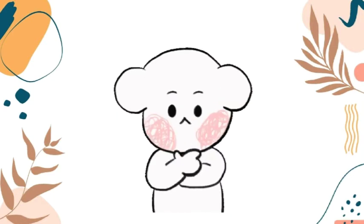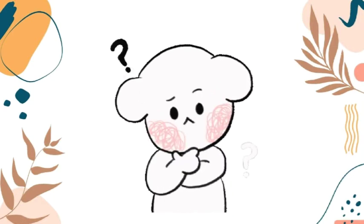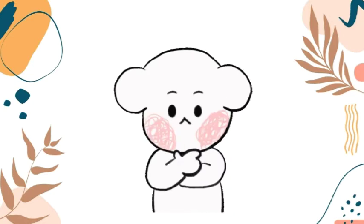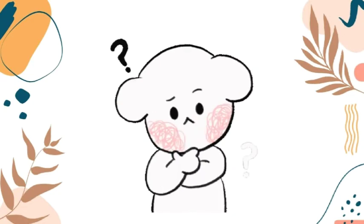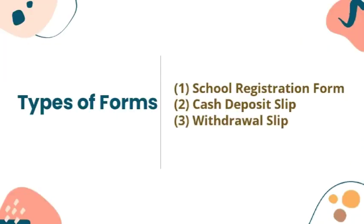Before we proceed, kindly get a pen and paper to jot down all the important points in the discussion. We are going to discuss types of forms that you need to be familiarized with: the school registration form, cash deposit slip, and withdrawal slip. Let's talk about them one by one.